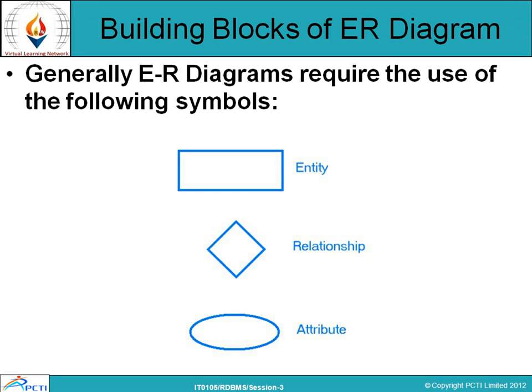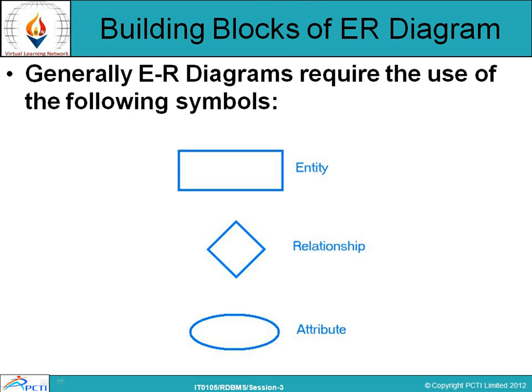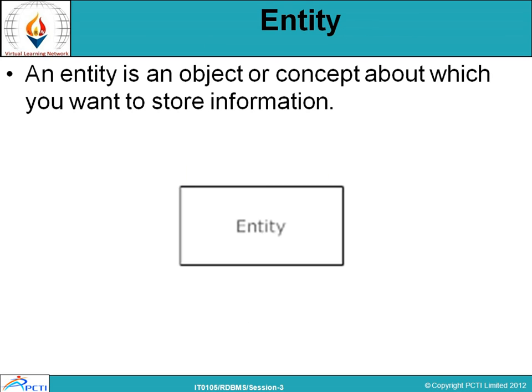There are some building blocks that we use in the ER diagram. In this diagram there are three main blocks. The rectangle block represents an entity, the diamond shape represents a relationship, and the oval shape represents an attribute. An entity is an object or concept about which you want to store information, represented in a rectangular box.